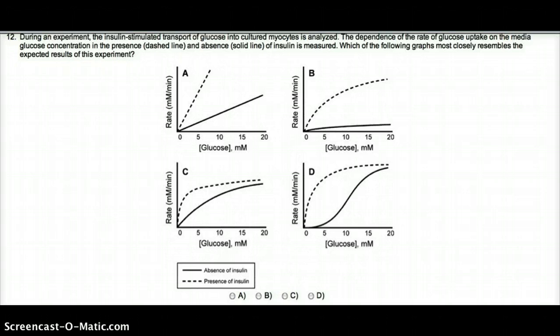So we have to see, what does the question say exactly? Which of the following graphs most likely resembles the expected results? The dependence of rate of glucose uptake on the media glucose concentration in the presence and absence of insulin is measured. Where the dashed line is the presence, and the solid line is the absence.